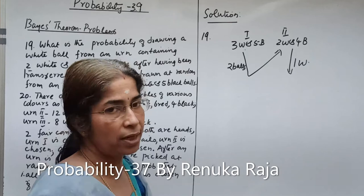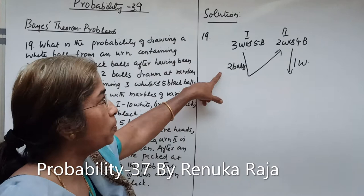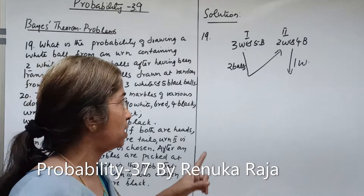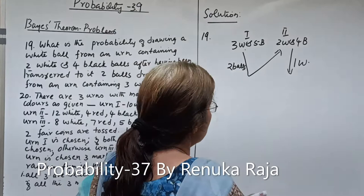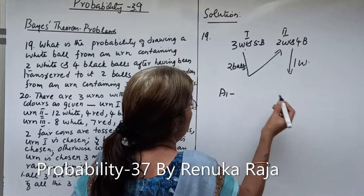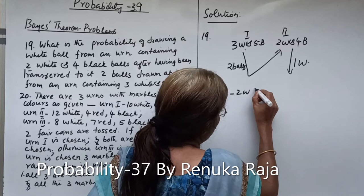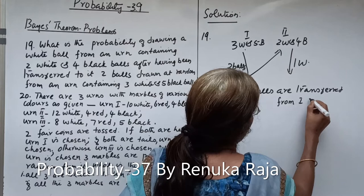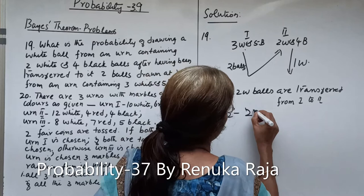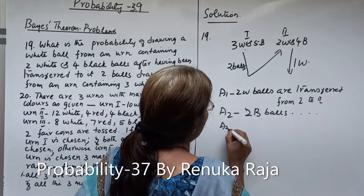One white ball is drawn from urn 2. Since 2 balls are transferred from urn 1 to urn 2, there are 3 possibilities: 2 white may be transferred, 2 black may be transferred, or 1 white and 1 black ball may be transferred. Let us consider these 3 events as A1, A2, A3. A1 means 2 white balls are transferred from urn 1 to urn 2.